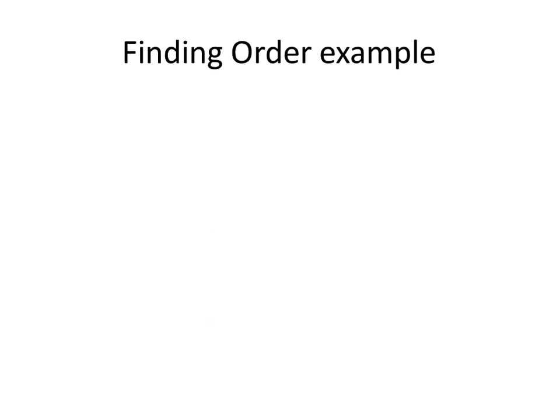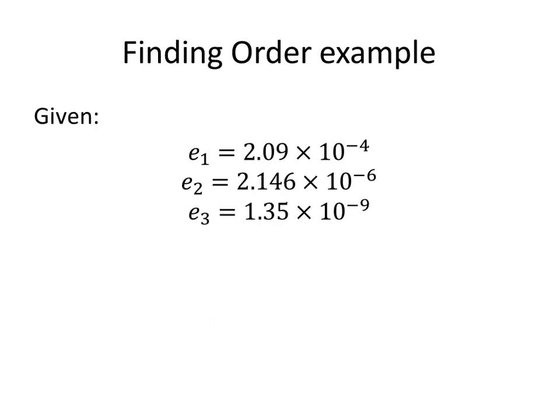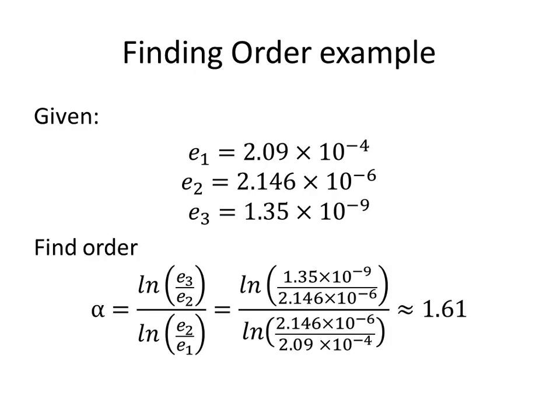So let's find the order of the Secant method. Given these three errors that we calculated using the Secant method, plugging them into the equation from earlier, alpha ends up being about 1.61.